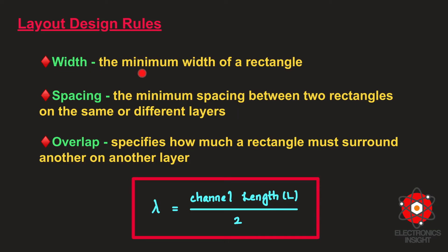The rules are defined in terms of layer dimensions, spacings, and overlaps. We can define the minimum width of the rectangle, the minimum spacing between two rectangles, and the overlap region which specifies how much a rectangle must surround another rectangle on a different layer. Two types of layout design rules exist: industrial design rules, usually specified in microns, and scalable design rules used in academic applications.